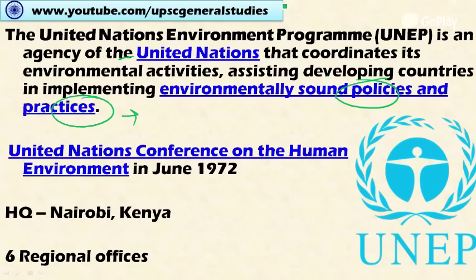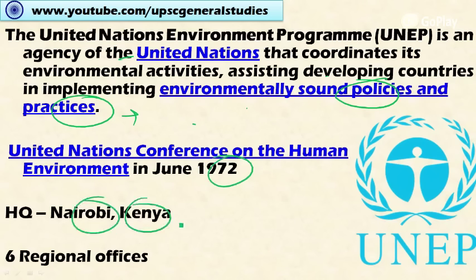This helps developing countries in formulating environmentally sound policies, thereby moving towards sustainable development. The United Nations Environment Programme was established as part of the United Nations Conference on Human Environment in June 1972, also called the Stockholm Convention. Its headquarters is in Nairobi, Kenya, along with six regional offices.